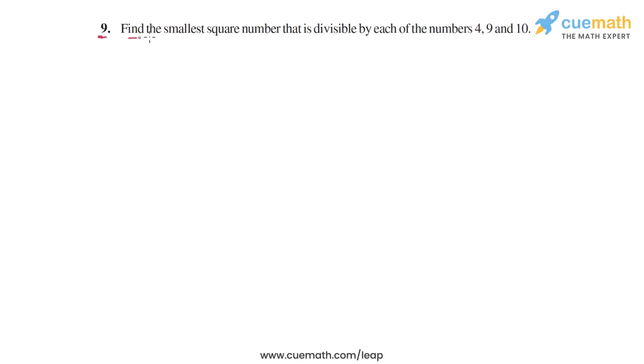In Question 9, we have to find the smallest square number that is divisible by each of the numbers 4, 9, and 10. So we have to find the smallest perfect square number which is a multiple of each of these numbers: 4, 9, and 10. Here's how we will solve this problem - we will do it in two steps.